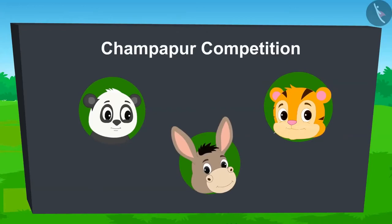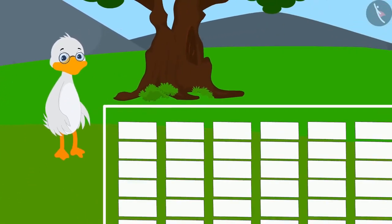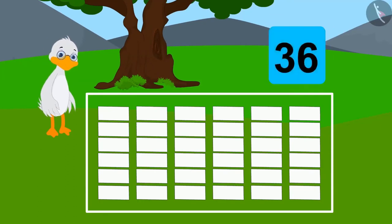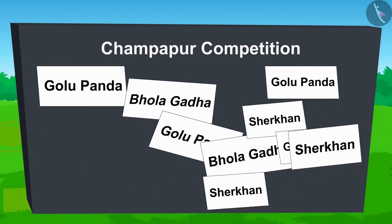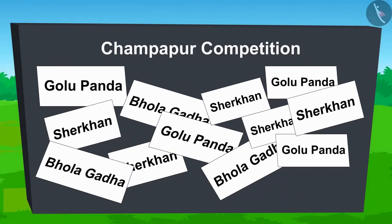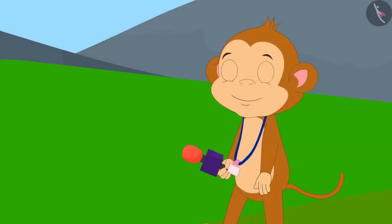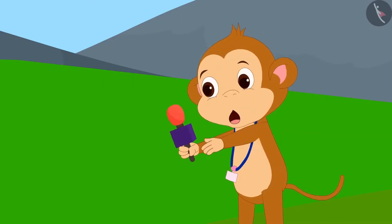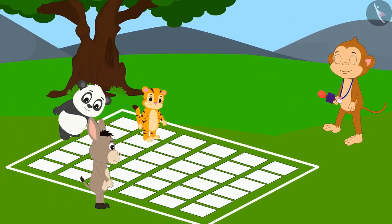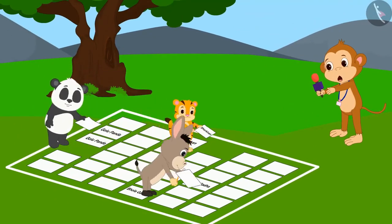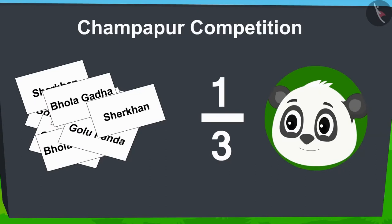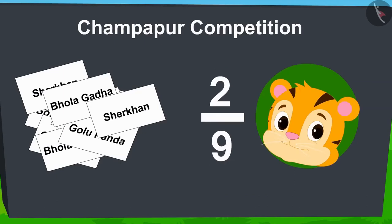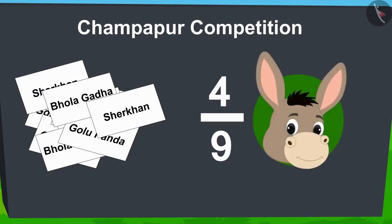Today, a competition is going on in the village. Uncle has scattered a total of 36 pieces of paper in a rectangular area. All contestants will be given one minute. The contestant who writes his name on the most pieces of paper will win. Babban, the moderator, indicated the start and all contestants quickly started writing their names on pieces of paper. On counting, it was found that Golu's name is written on one-third of the total paper pieces, Shere Khan's name on two-ninths, and Bholla's name on four-ninths.